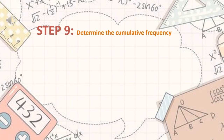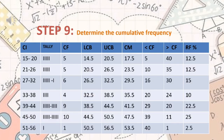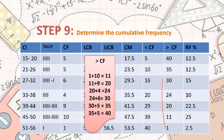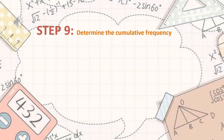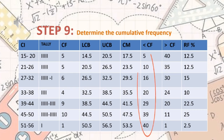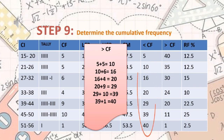Step 9: determine the less than and greater than cumulative frequency. For the greater than cumulative frequency, the formula works as follows: 1 plus 10 equals 11; 11 plus 9 equals 20, and so on. Our greater than cumulative frequency values are 11, 20, 24, 30, 35, and 40. For the less than cumulative frequency, we copy the frequency starting from the first class — 5 from the frequency column. Our less than cumulative frequency values are 5, 10, 16, 20, 29, 39, and 40.